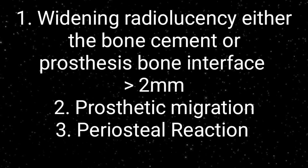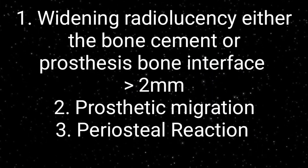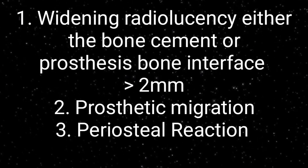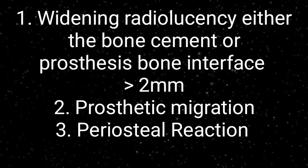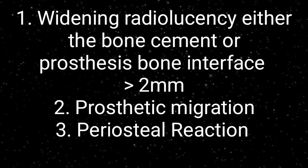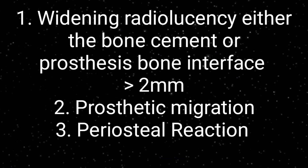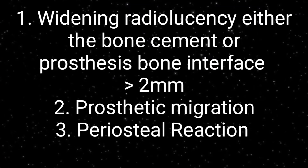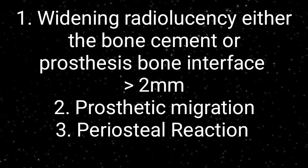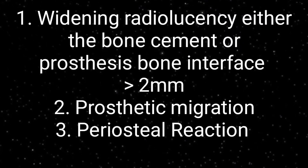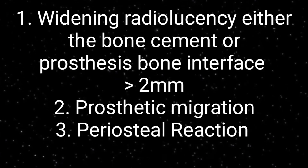Radiological imaging can be used to assess joint prosthesis loosening. First, there will be widening radiolucency at the bone-cement or prosthetic-bone interface — if it is more than two millimeters, it is considered joint prosthetic loosening. Second, there may be prosthetic migration, where it deviates from its normal anatomical location. Third, an indirect sign is periosteal reaction at the site of the prosthesis, indicating loosening and requiring further workup.